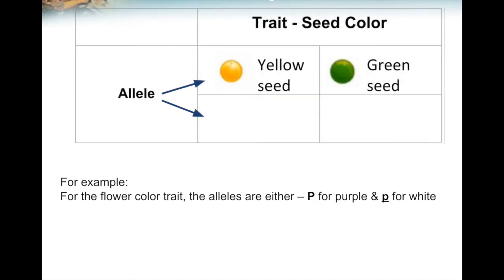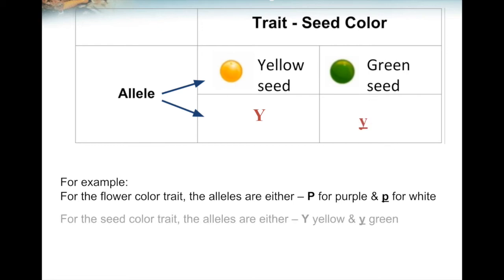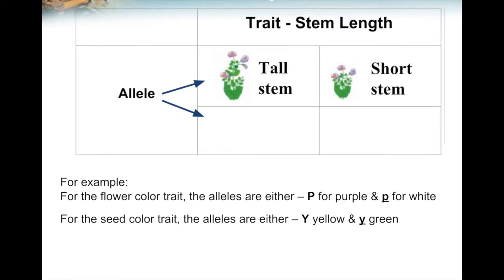For seed color, pea plants can either have yellow seeds or green seeds. When Mendel made a pea plant with yellow seeds reproduce with a pea plant that had green seeds, all of the offspring had yellow seeds. Since yellow seed color overpowered green seed color, it's the dominant allele, represented with a capital Y, and green seed is recessive, represented with a lowercase y. For stem length, pea plants can either have tall or short stems. When Mendel crossed a tall-stem parent with a short-stem parent, all offspring had tall stems, making it dominant, represented with a capital T, and short stem is recessive, represented with a lowercase t.